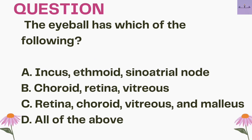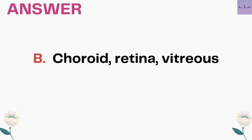Next question: the eyeball has which of the following? A. Incus, ethmoid, sinoatrial node. B. Choroid, retina, vitreous. C. Retina, choroid, vitreous and malleus. D. All of the above. Option A contains the sinoatrial node, which is not related to the eye, and incus is also not related. Option C includes malleus, which is also not related to the eye. So the answer is option B: choroid, retina, and vitreous.